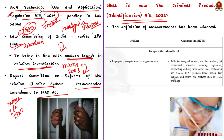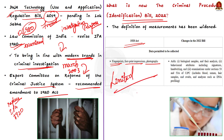Firstly, the identification of measurements has been altered. The definition of measurements in the 1920 Act included only fingerprints, footprint impressions and photographs — the scope was very limited. But the 2022 bill, along with physical measurements, includes biological samples as well. The definition of measurements is broadened and its scope is widened.